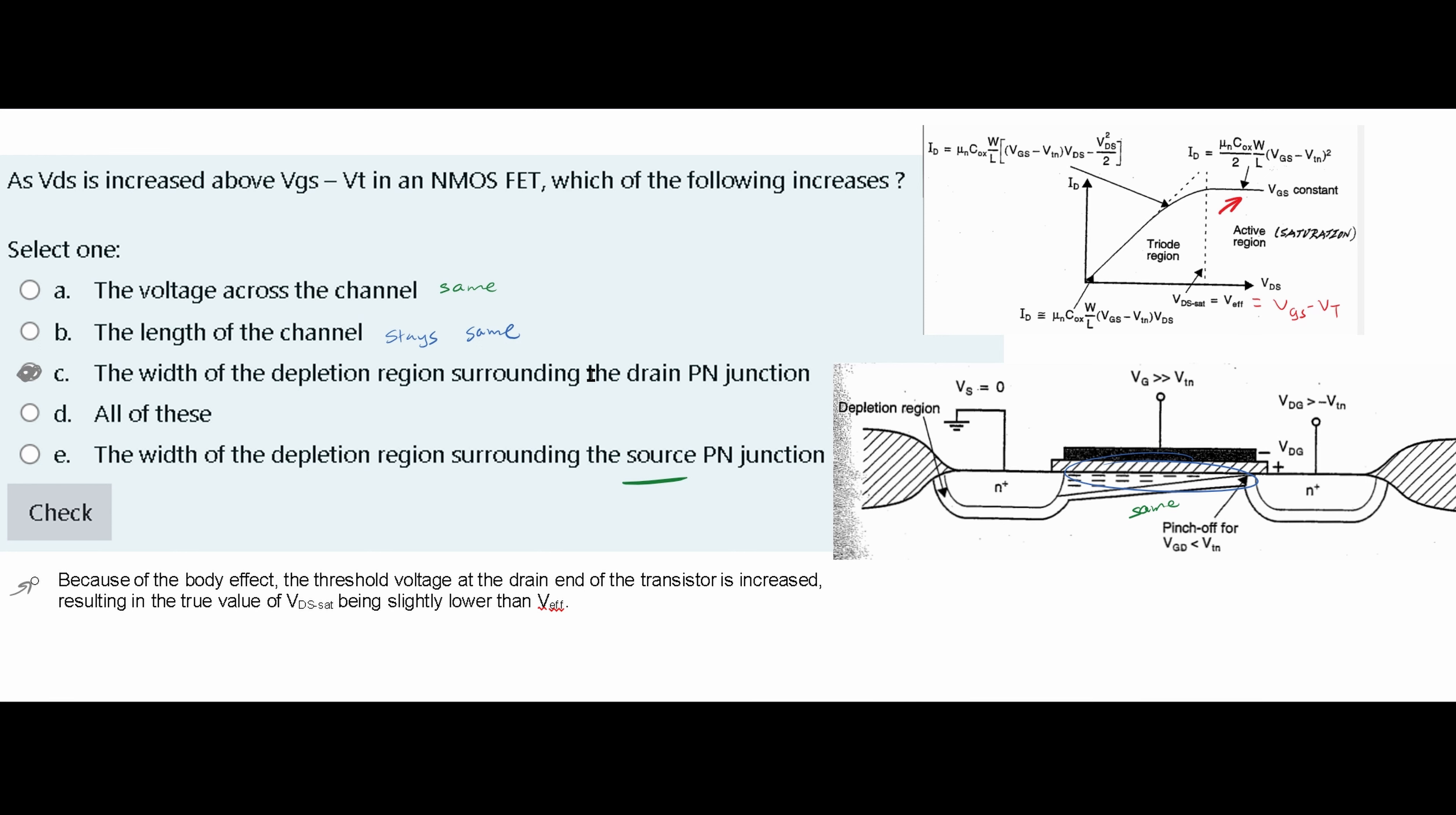As VDS is increased above VGS minus VT in an n-MOSFET, we're asked which of the following increases. So we have five options here, only one is correct.